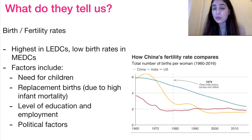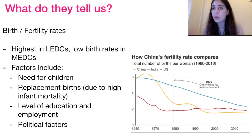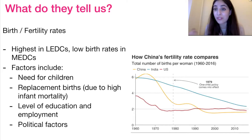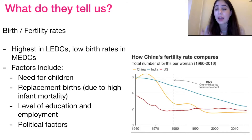What do these demographic tools tell us? Birth and fertility rates are usually highest in less economically developed countries, with lower birth rates in MEDCs. Factors that affect birth and fertility rates include the need for children — LEDCs typically need a lot of people to work, for example on farms or to help with the family. There are also a lot of replacement births due to the high mortality rates.